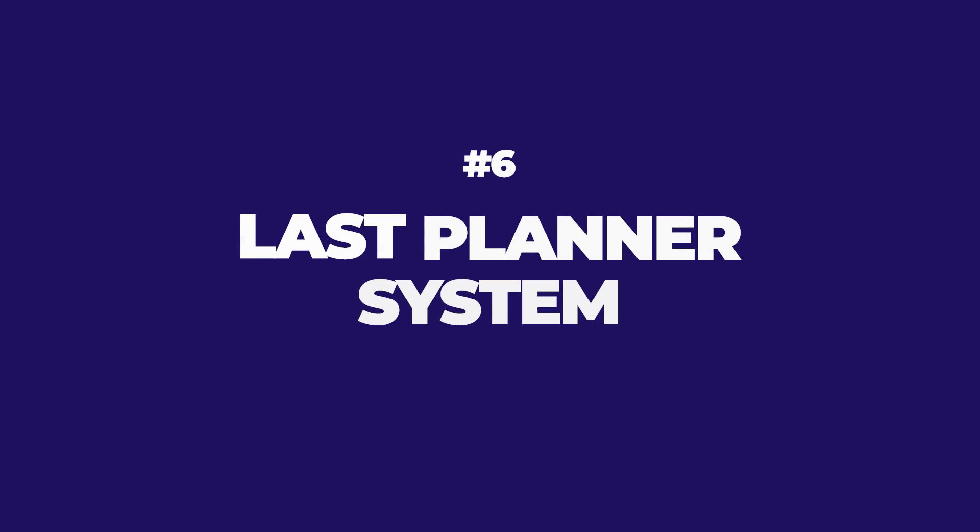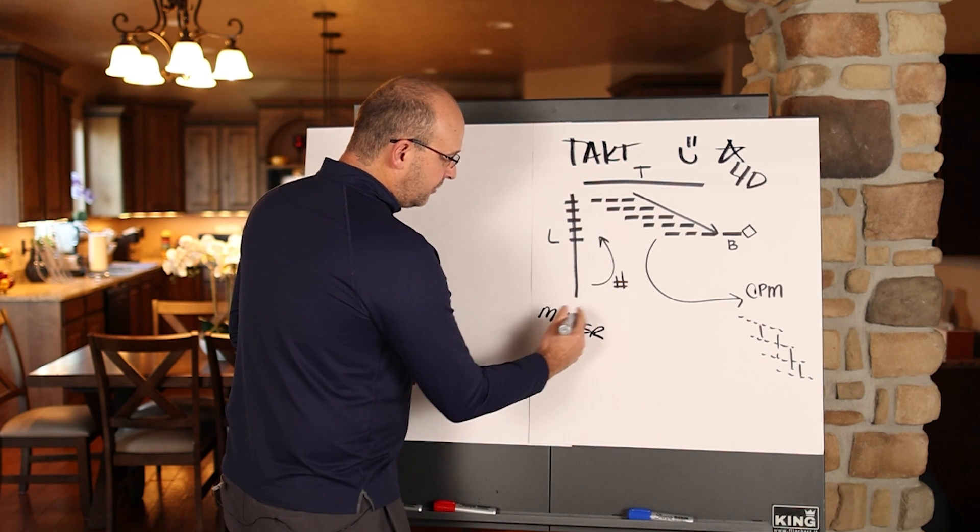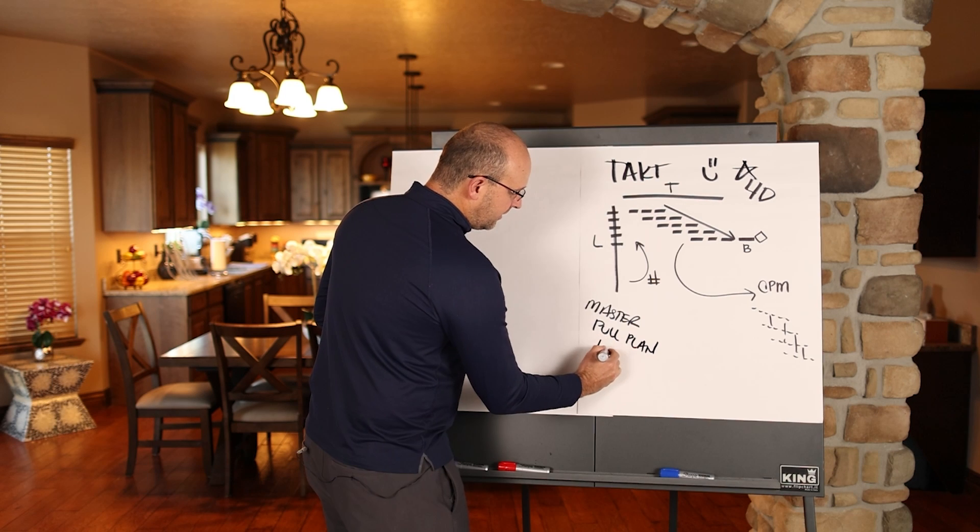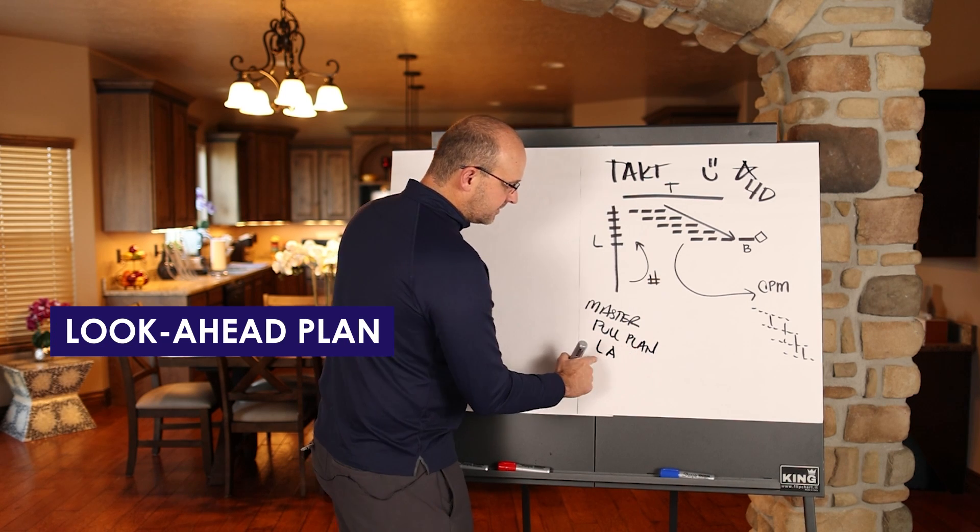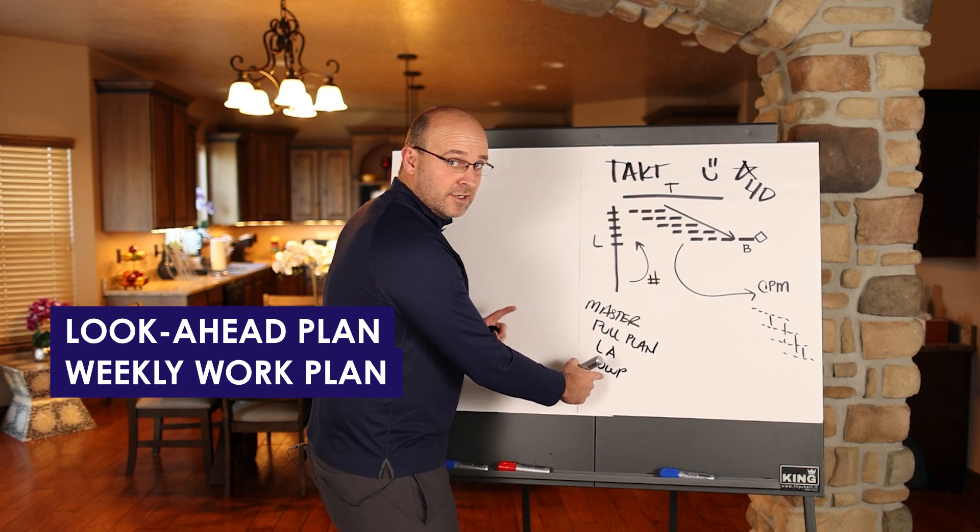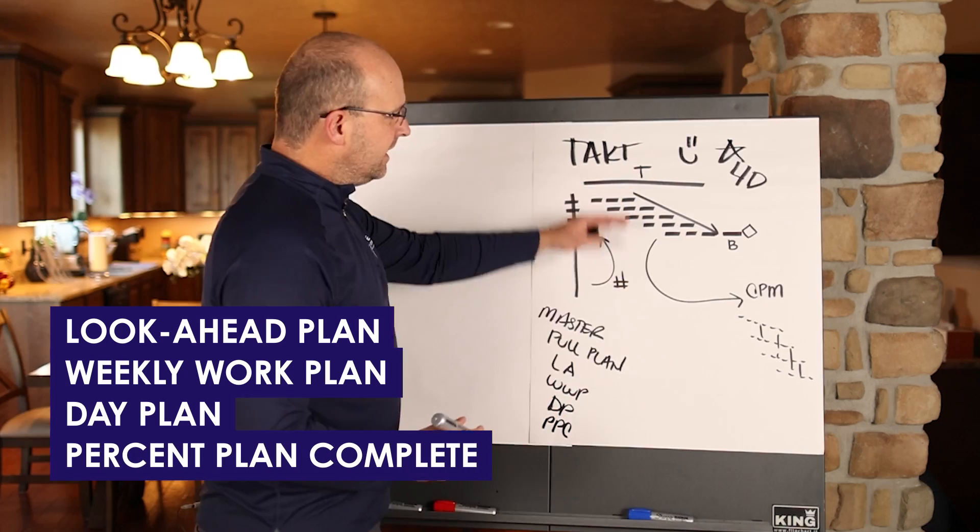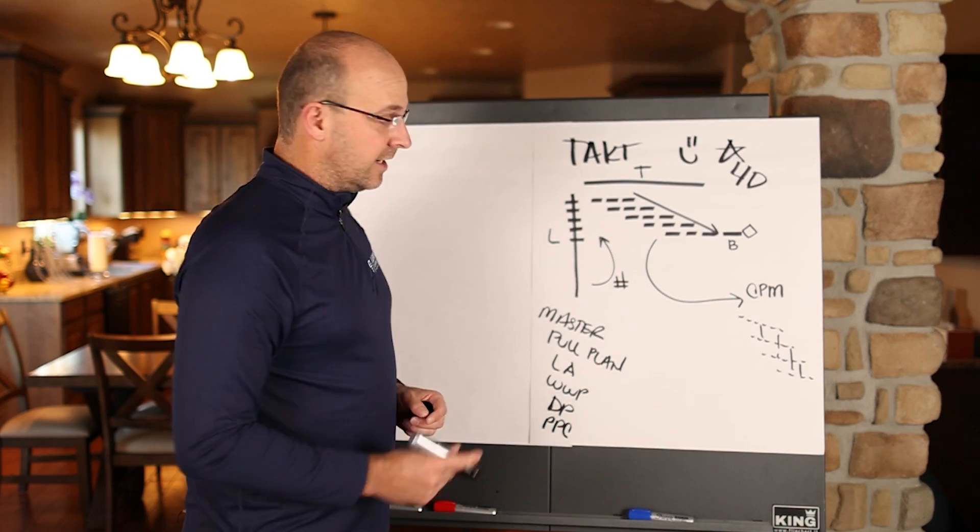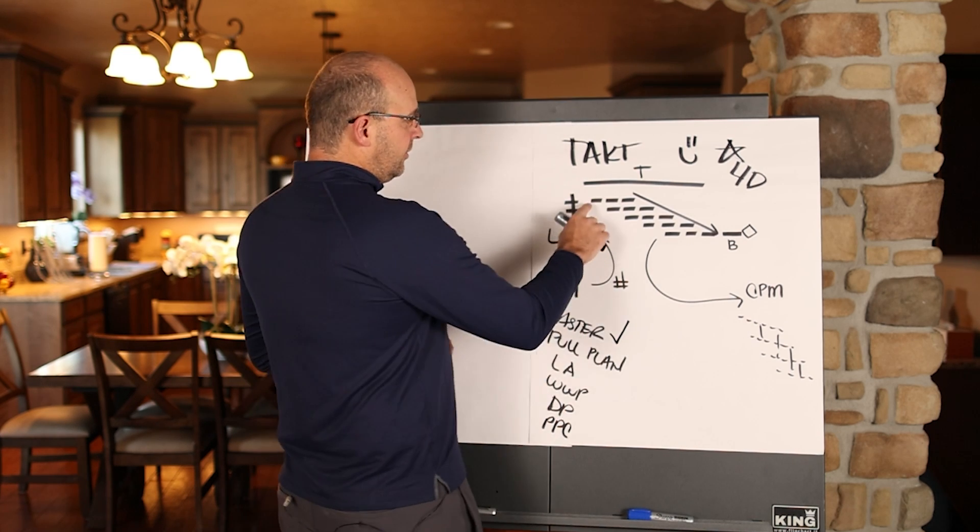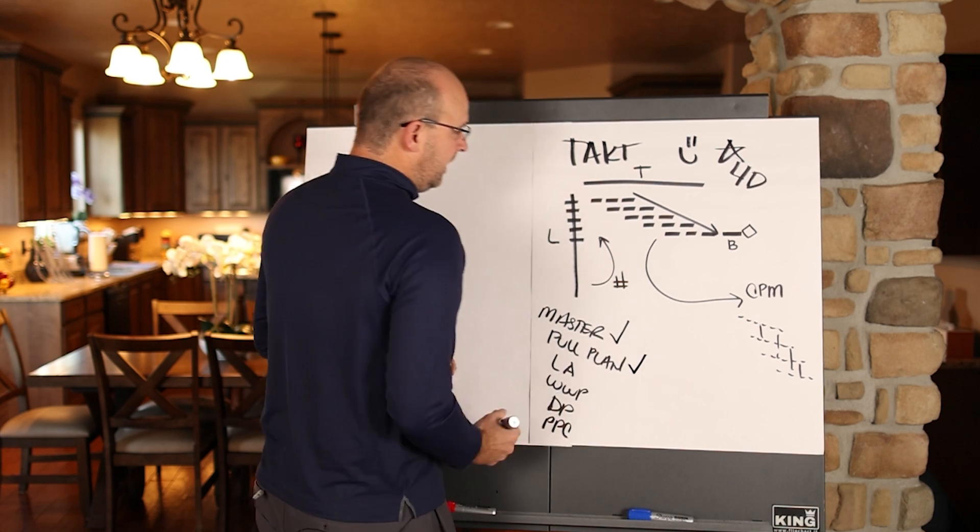Now, last planner says that you have a master schedule and that master schedule, either you pull plan from it or you pull plan to make it. And then you have what's called a look ahead, which I will symbolize with LA, weekly work plan, which is your short interval plan for the week, and then your day plan, and then your track percent plan complete. In this takt system, you also have last planner because this is your master schedule. Check. You pull plan to make these sequences and to package them. Check.